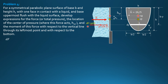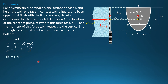We begin with dF equals p dA. Replace pressure by gamma times (h minus y) and dA by x dY. Expressing x in terms of y by the squared property of the parabola: y over x squared equals h over b squared. So x equals b times the square root of y over the square root of h. Substituting, dF equals gamma (h minus y) times b times square root of y over square root of h, dY.